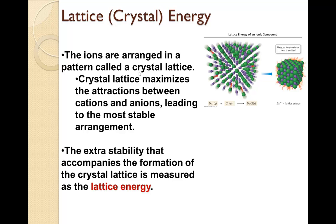A crystal lattice maximizes the attraction between the cations and anions, leading to the most stable arrangement. These tend to be much more stable than the covalent bonds we just saw. The extra stability that accompanies the formation of the crystal lattice is measured as the lattice energy. Notice that bond energy is now called lattice energy with ionic compounds.